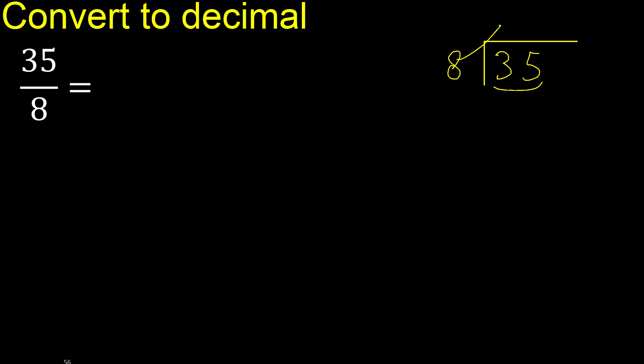But not greater. 8 multiply by 5 is 40. 40 is greater. Multiply by 4 is 32. OK, is not greater. 35 minus 32 is 3. Next.